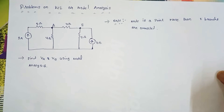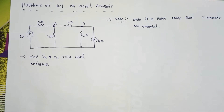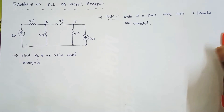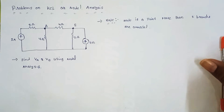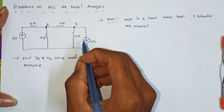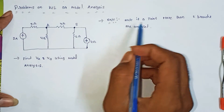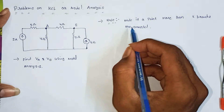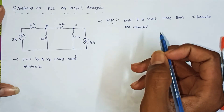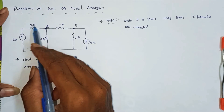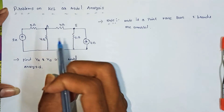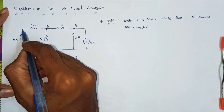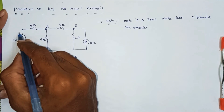First of all, we need to find how many nodes there are. A node is a point where more than two branches are connected. If only one branch is connected, it is not a node. So in KCL or nodal analysis, the first step is to identify the nodes. Here we have only two branches, so this point is not a node.